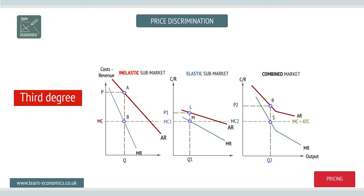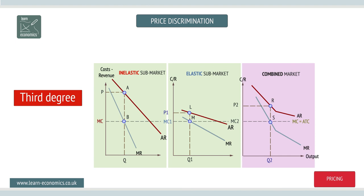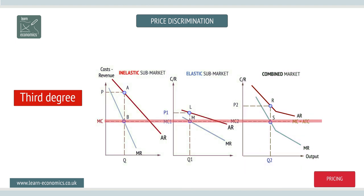Profits from separating a market into an inelastic sub-market and an elastic one are greater than from combining the market. For convenience, MC is assumed constant and equal to AC. Profit maximization in each market is where the MR for each sub-market equals the common MC. Here, supernormal profits X plus Y are greater than Z, so price discrimination is beneficial.